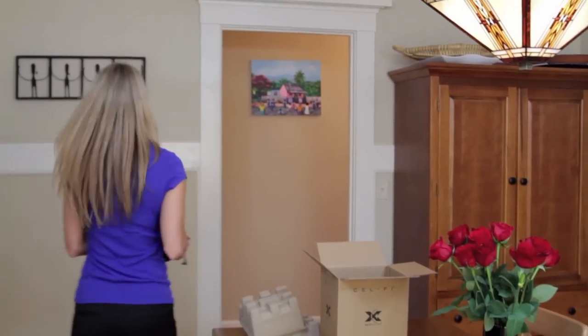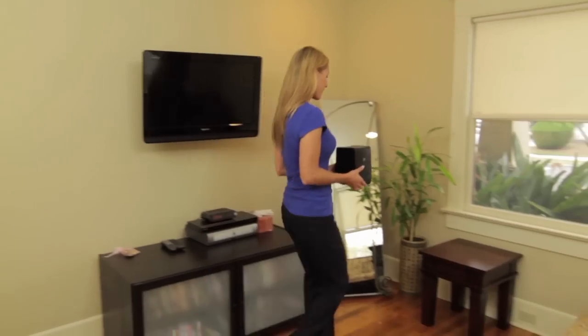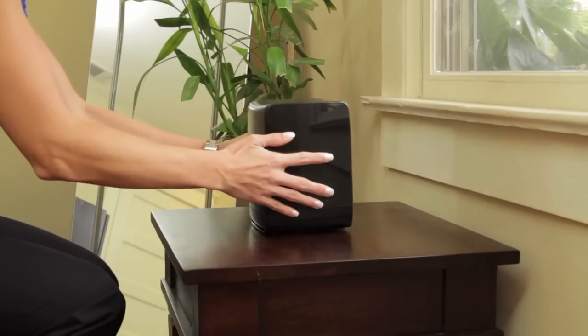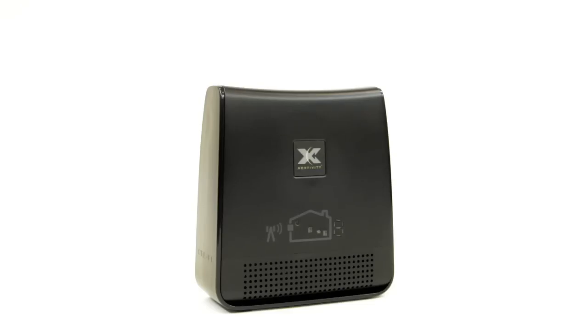Place the window unit in the area where you found the most 3G bars available. Now, let's set up the coverage unit.